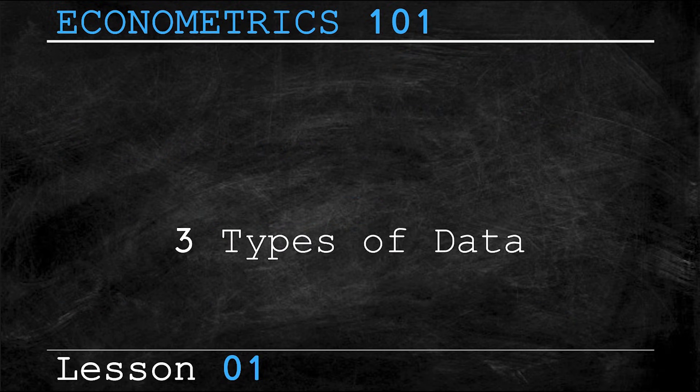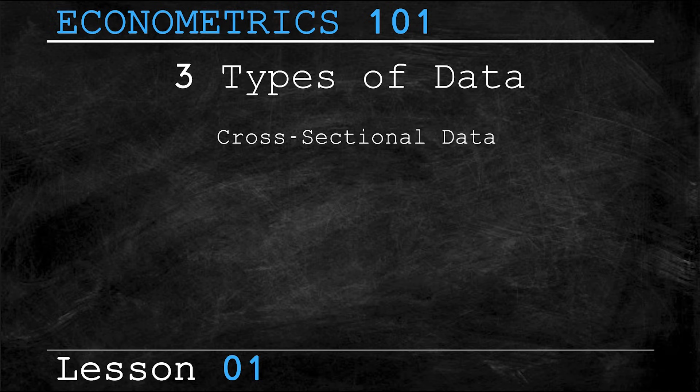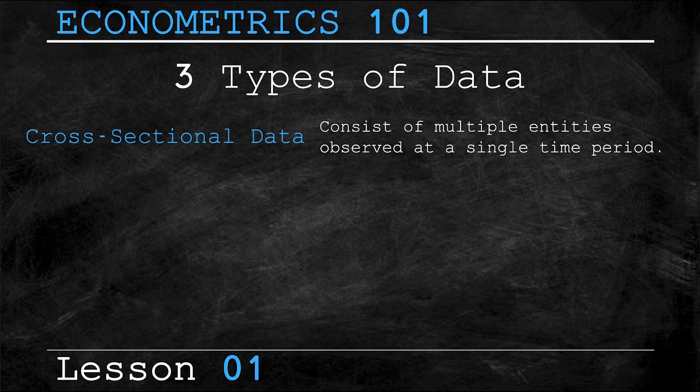Now in econometrics, there are three types of data that you're going to use, which vary the number of individuals or entities being observed and the number and frequency of time periods of these observations. Allow me to explain with some examples. First, we have cross-sectional data. This data consists of multiple individuals or entities observed at a single time period.